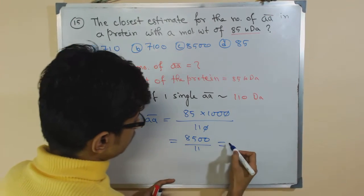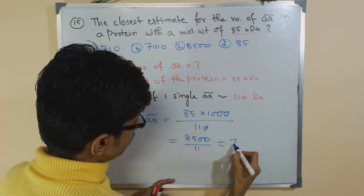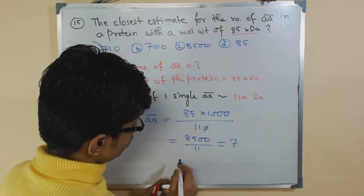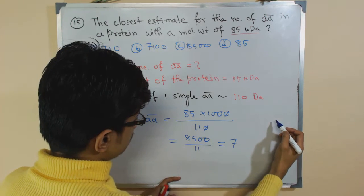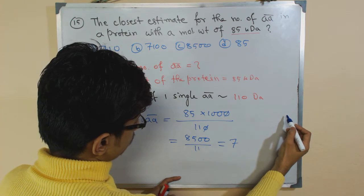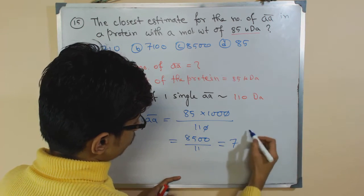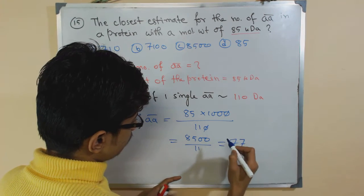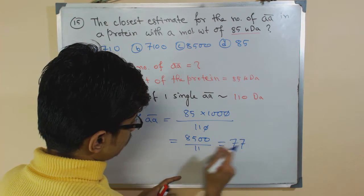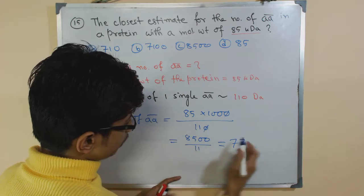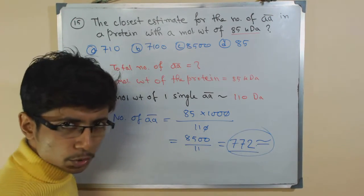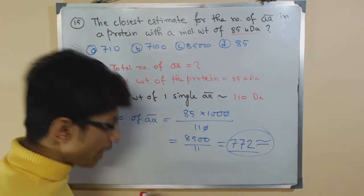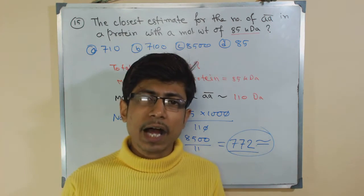The answer it will give us is approximately 772 amino acid sequences. Now you may ask, how could the molecular weight of all amino acids be assumed by us as 110?